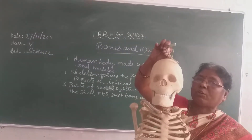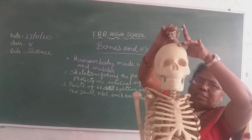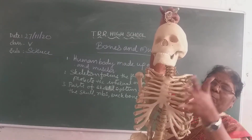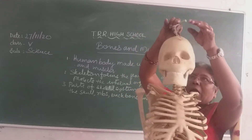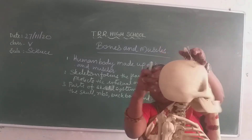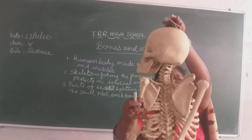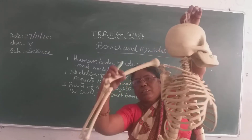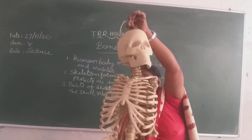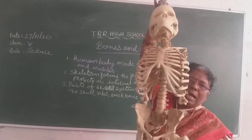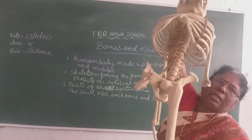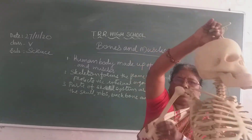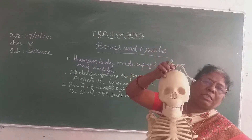Now here you will see what are the parts of the skeletal system. Here you are seeing this — this is what you call the skull. Here you are seeing ribs; this is called a ribcage. Here you are seeing the arm. This is what you call the backbone. And limbs — this is called forelimbs and this is called hind limbs. Legs are called hind limbs, and forelimbs are our hands.